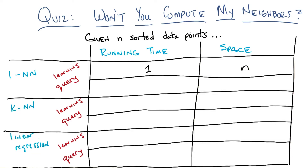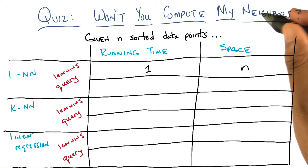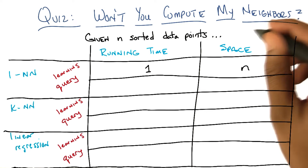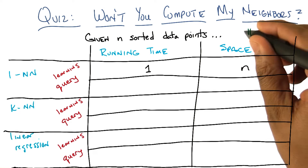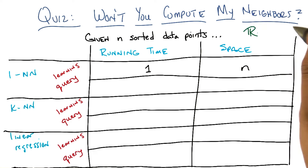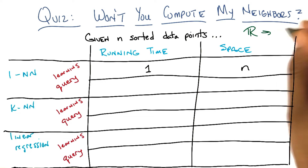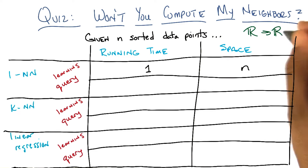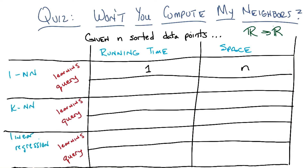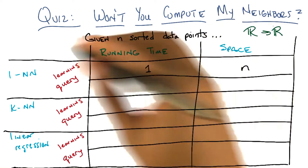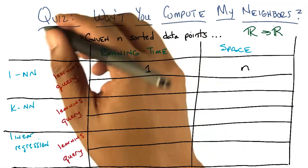And this is on data points, I assume. So, what does it mean for data points to be sorted? Let's assume that we're living in a world where all of our data points are in R1 — that could be sorted — and we're going to be outputting some real number as well. They're points on a number line.